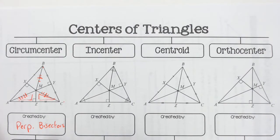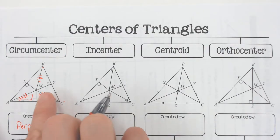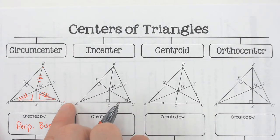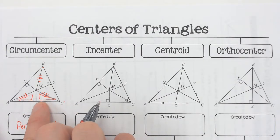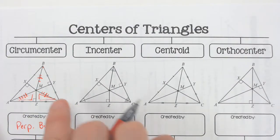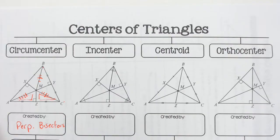So perpendicular bisectors — the parts that are equal are from the center to the corners of the triangle. You cut the sides in half with a 90 degree angle, and it's from the center to the corners that are congruent.